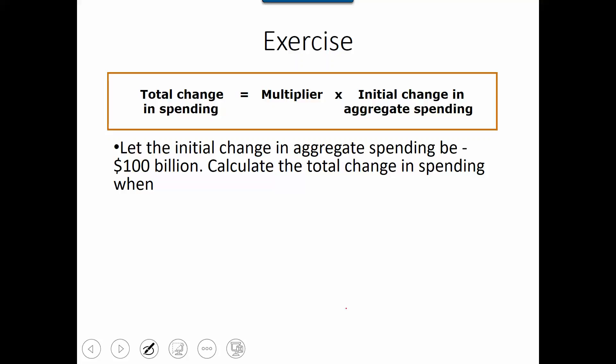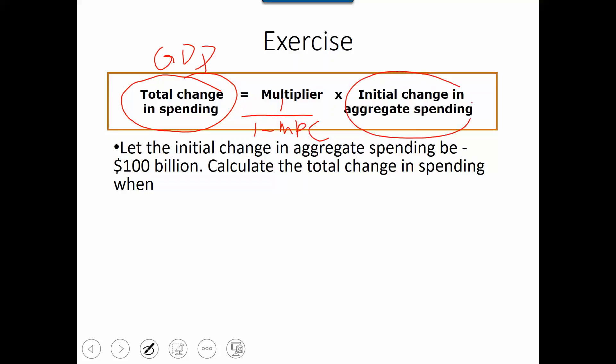So first, we will introduce this formula. In order to understand how much change will happen at the end of the cycle, we need to know this formula. The total change in spending — the total change in GDP — is equal to the multiplier, which is 1 divided by (1 minus MPC), multiplied by the initial change in aggregate spending.